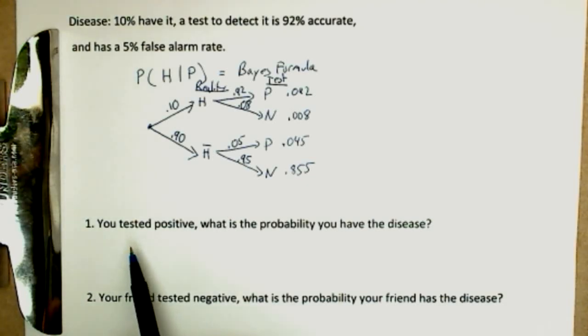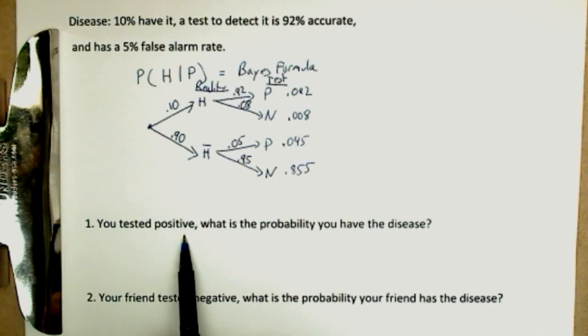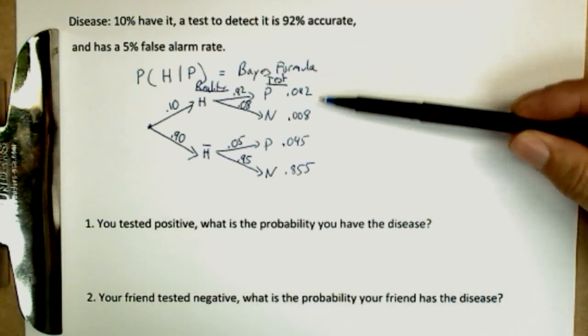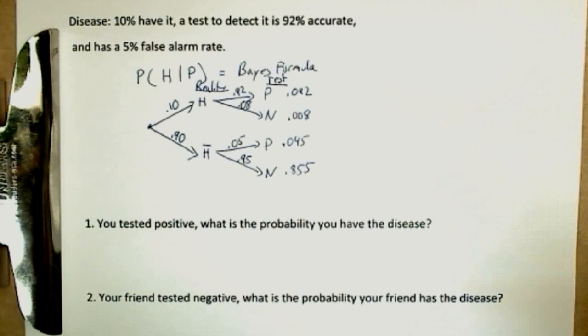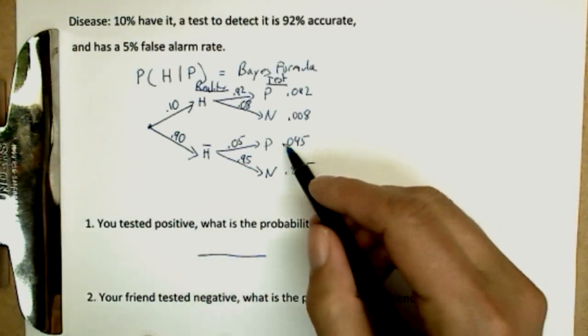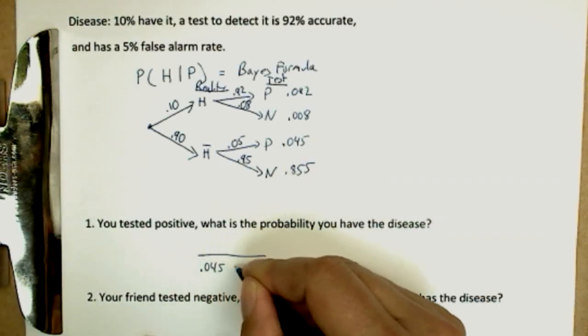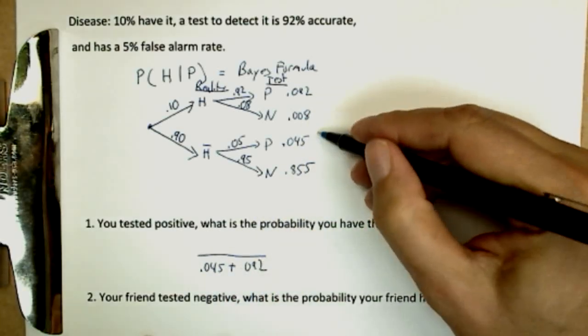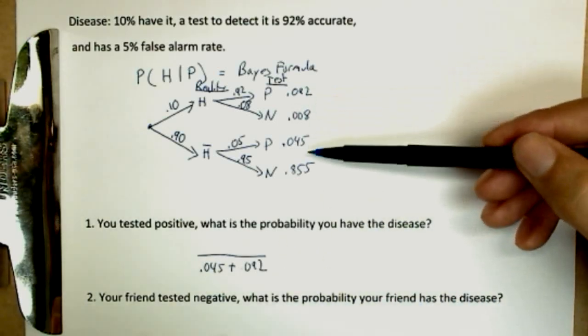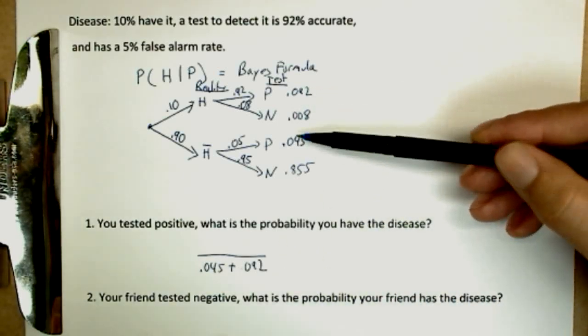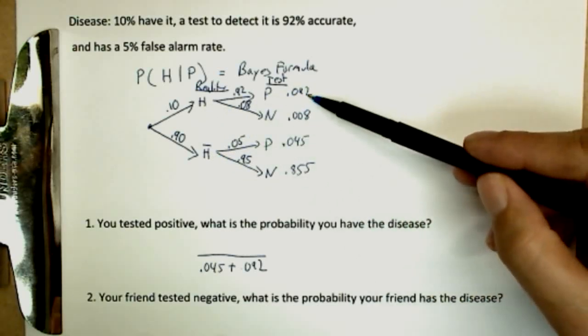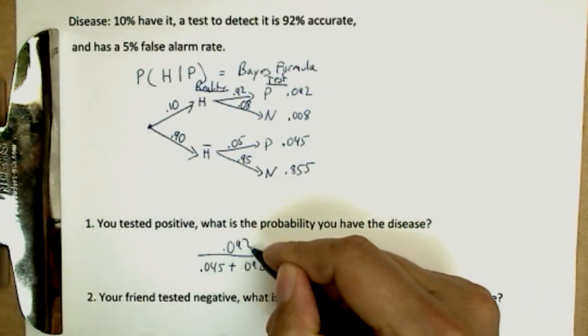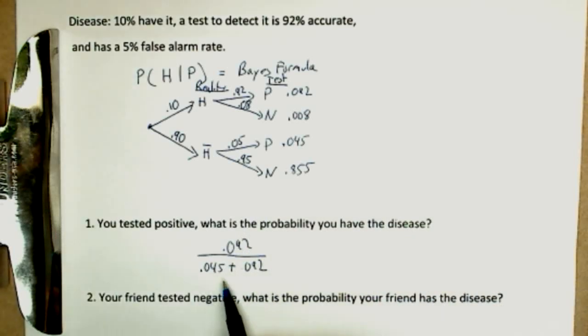Just like in the previous probability slide where we limited our world to people that had the given condition, we now know you tested positive. That means you're either in this group or this group. What is the probability you have the disease? If you tested positive, you're either in this 0.045 or the other one, 0.092. Those are the groups that tested positive. What's the probability you have the disease? Which of these two numbers means you had the disease? This one was from not having it. This one's from having it. So clearly 0.092. And our answer is 0.092 divided by 0.045 plus 0.092. Let's see what that gives us.